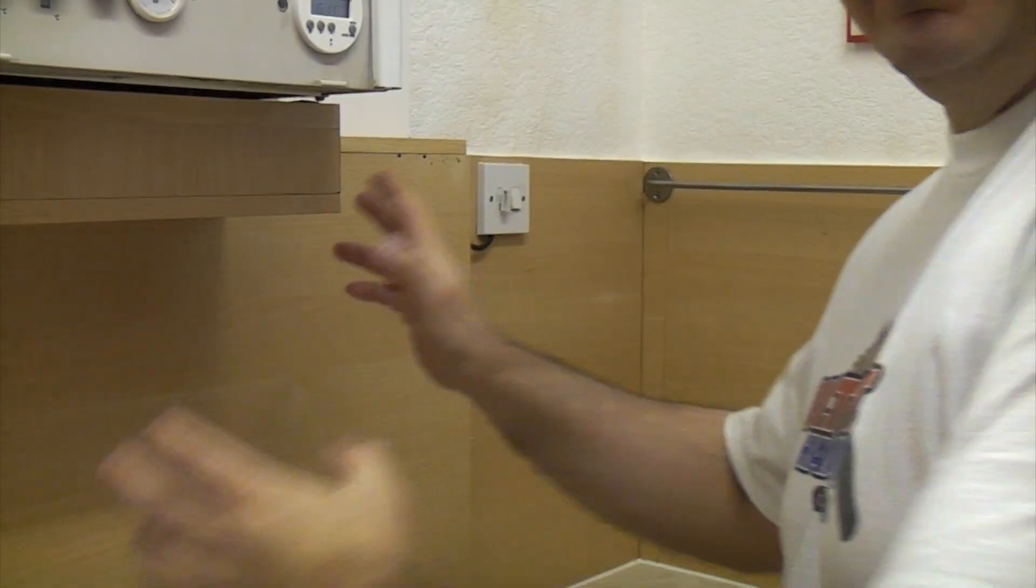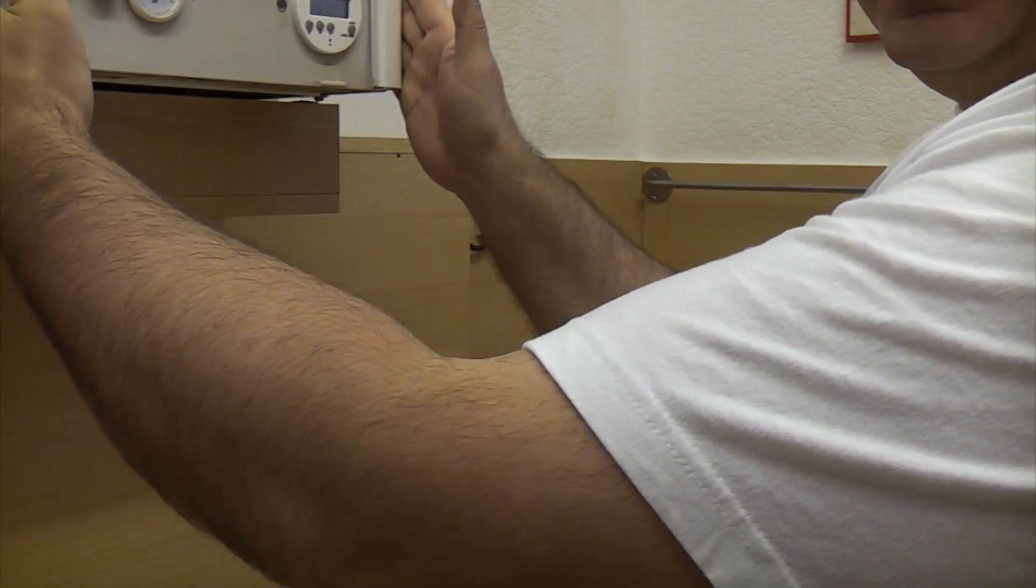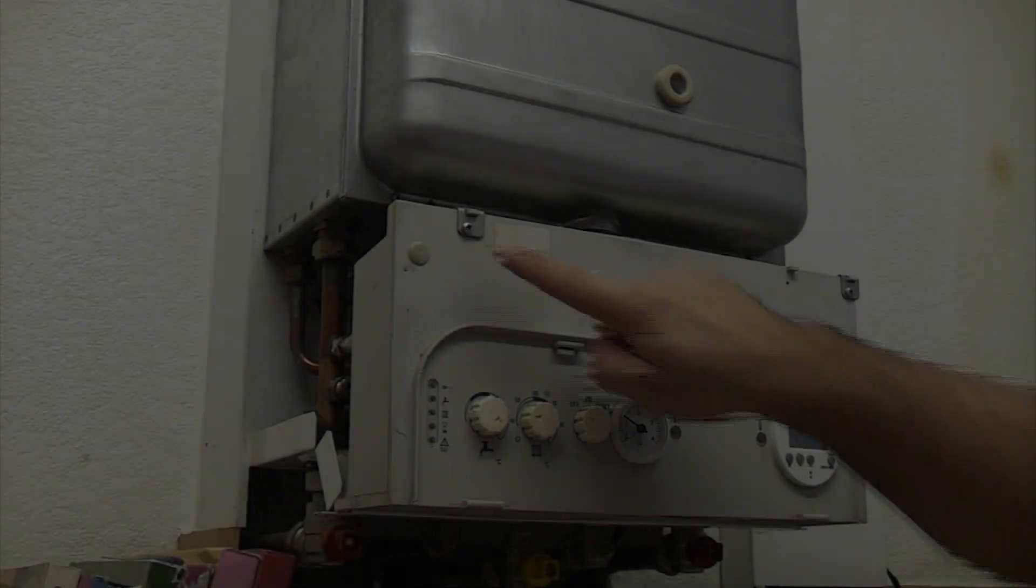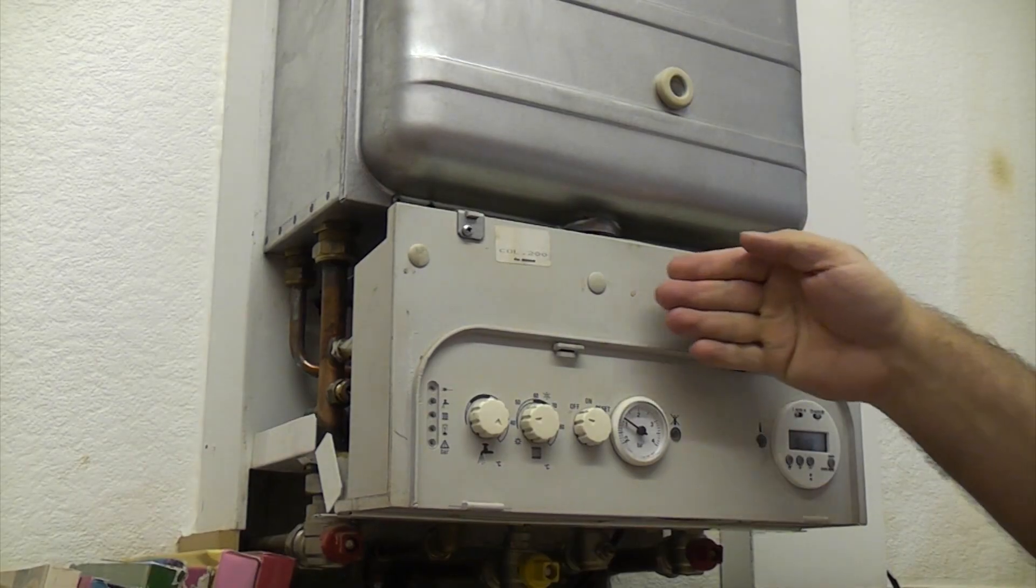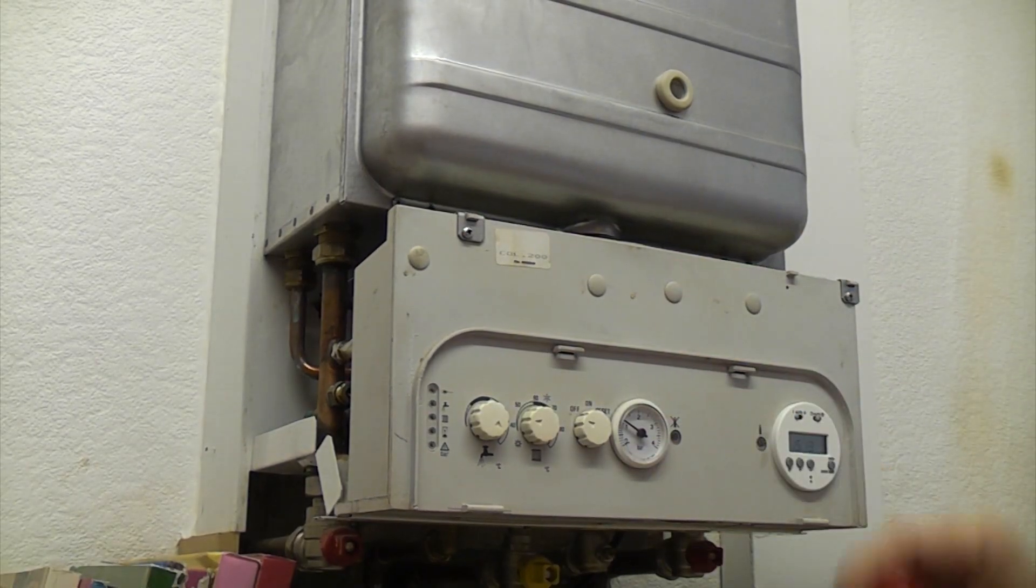So now I am just going to remove the boxing in from below the boiler, and then I am just going to remove the case from the boiler itself. Then I am just going to remove these two screws, and I am going to pull the front panel down so that we can get to the electrical wiring.